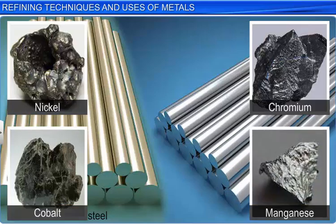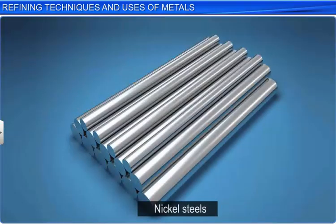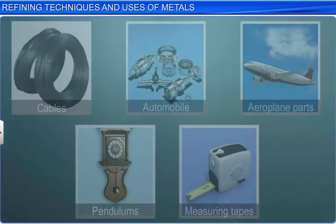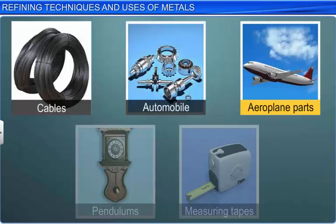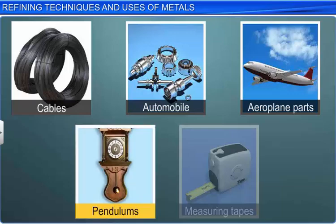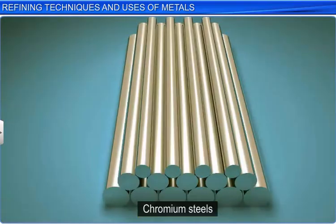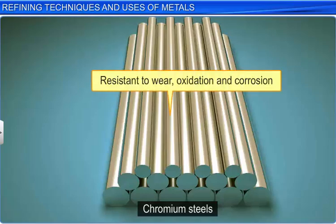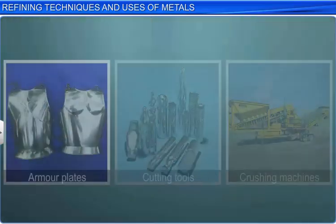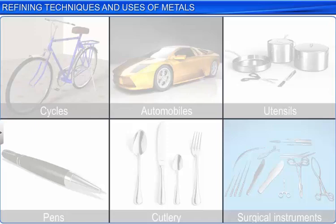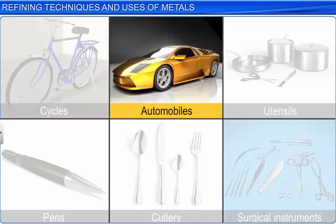For example, nickel steels, which have varying amounts of iron and nickel, are resistant to wear and tear and can withstand mechanical shock. Hence, nickel steels are used for making cables, automobile and aeroplane parts, pendulums and measuring tapes. Similarly, chromium steels, which are extremely hard and resistant to wear, oxidation and corrosion, are used in armor plates, cutting tools, crushing machines, and as stainless steel for cycles, automobiles, utensils, pens, cutlery and surgical instruments.